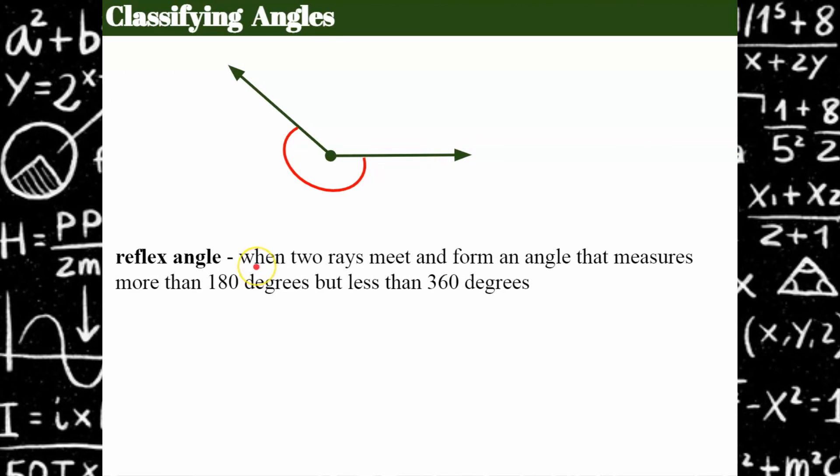Then we have a reflex angle. A reflex angle is when two rays meet, and we're talking about an angle that is greater than 180 degrees. So students often look at this and think there's only one angle, that it's right here. Nope, there is what we call a reflex angle. It's right here. So it's different. It's not what you're used to, but this is also an angle, and it's an angle that is greater than 180 degrees, but less than 360 degrees.